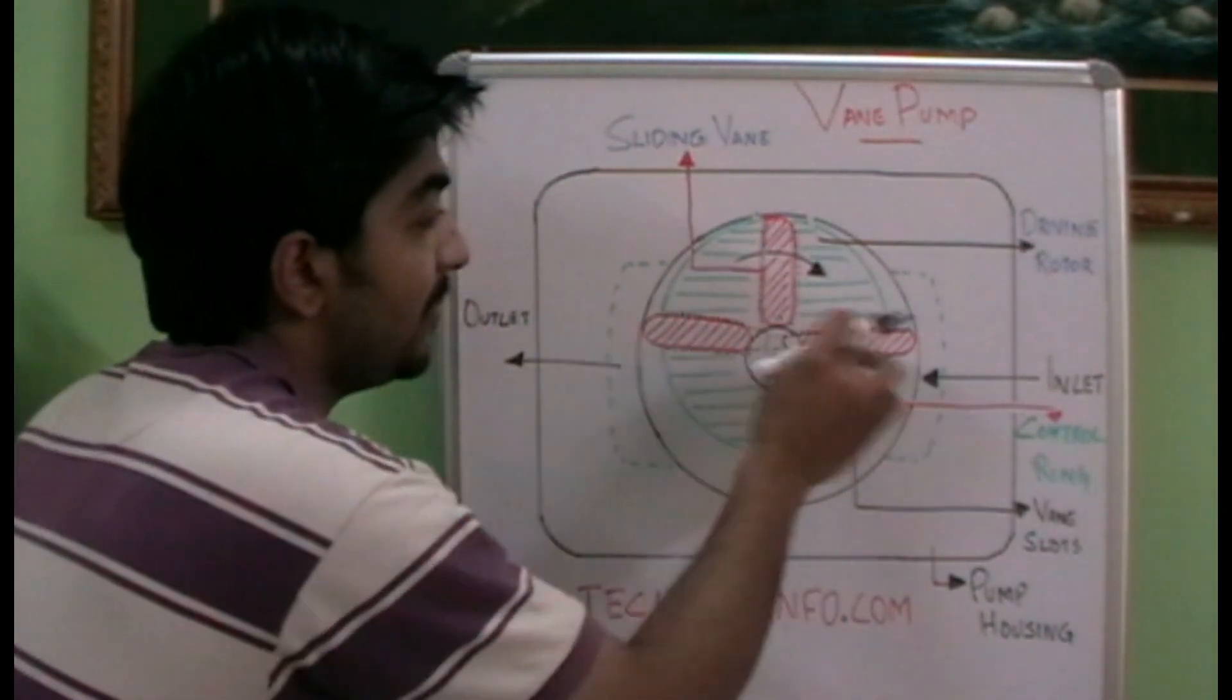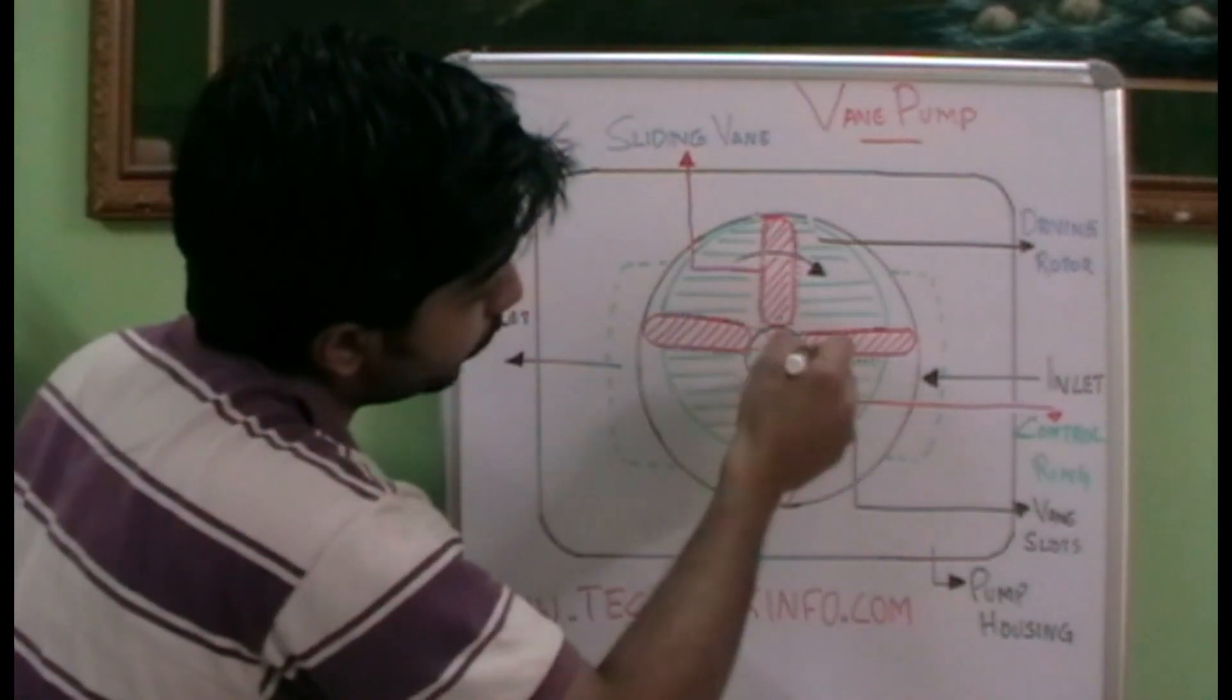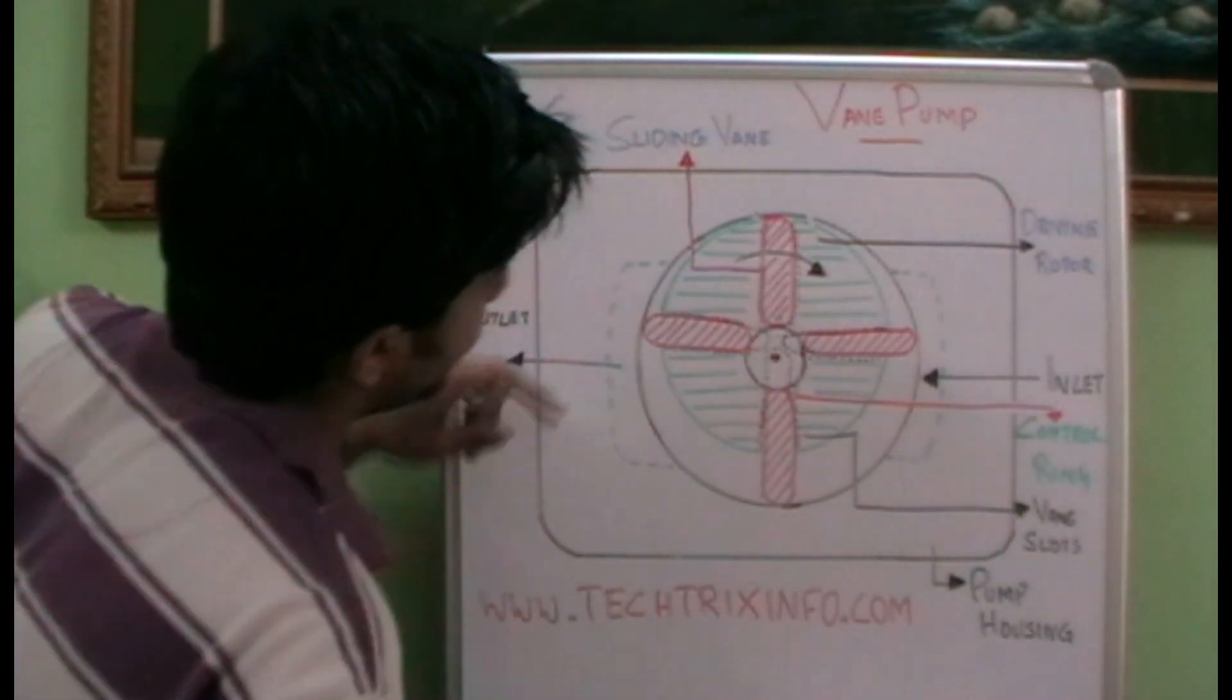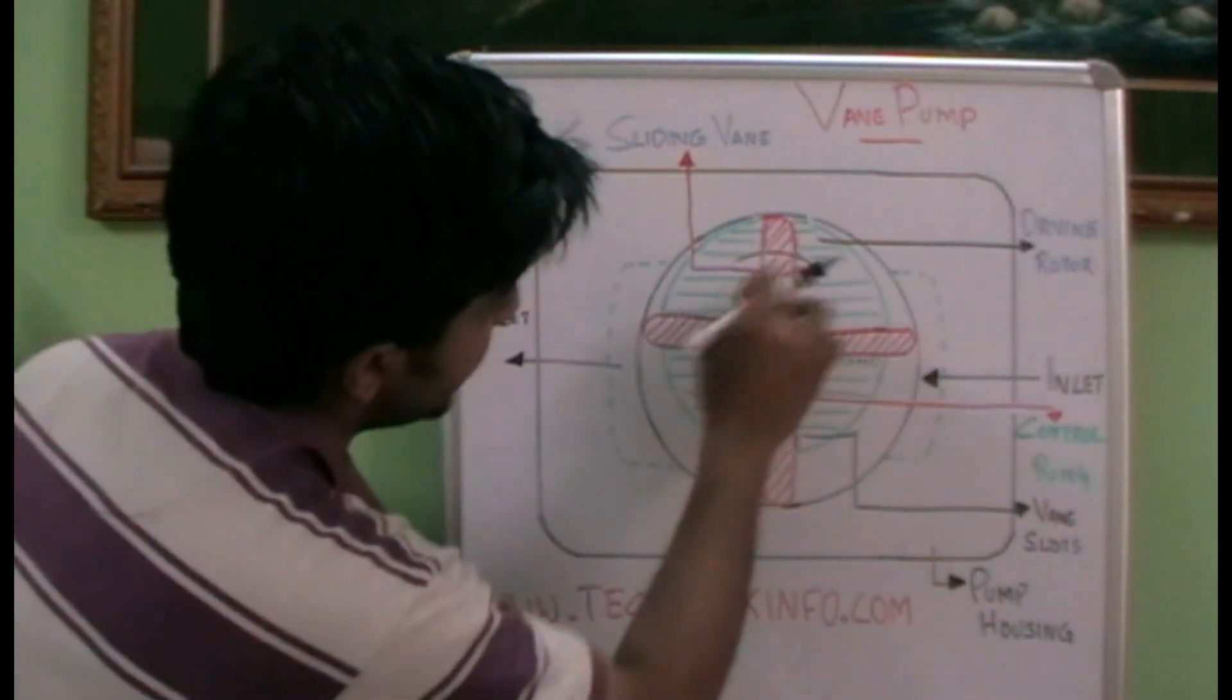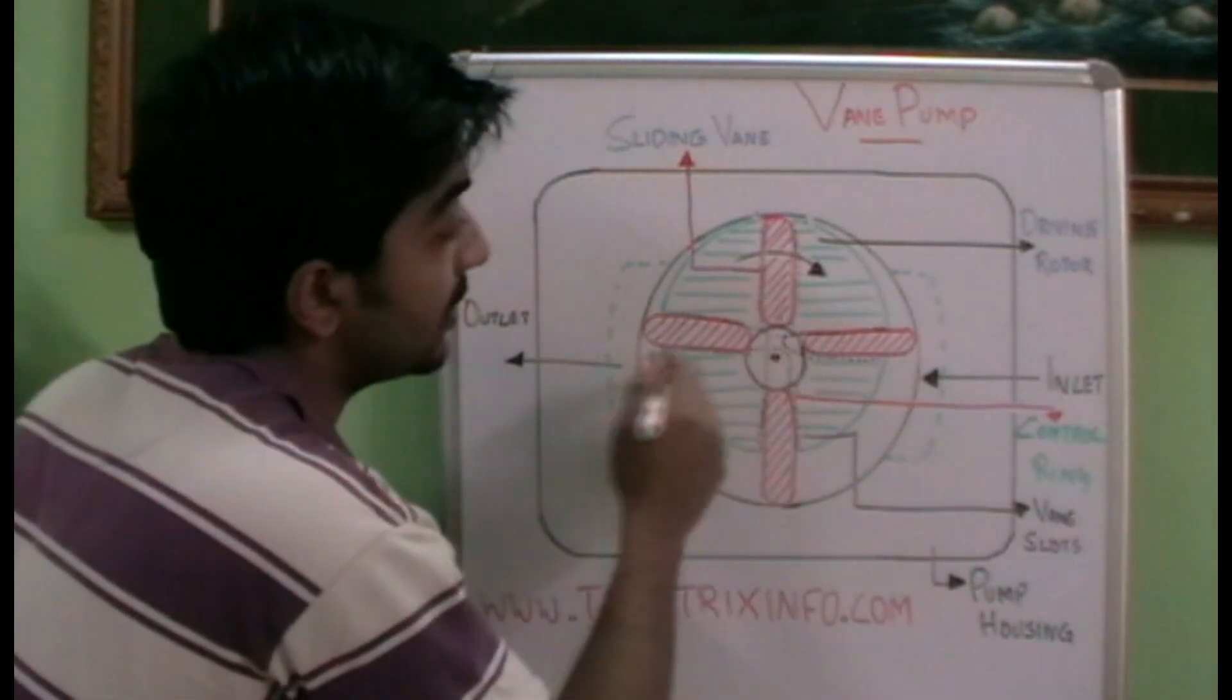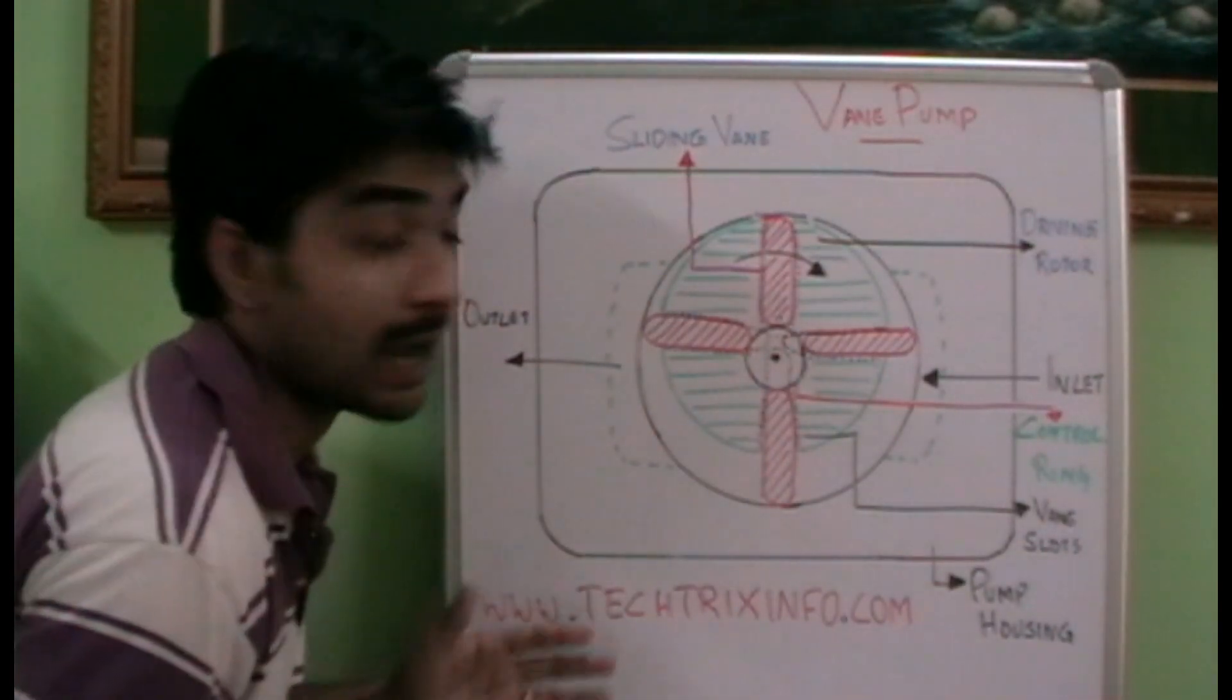And inside these slots we have these red colored vanes which are placed over here. And on the center which is marked in black we have the control ring which is helping these vanes to be held in its position. This control ring is controlling the position of these vanes. So let's see how it works.